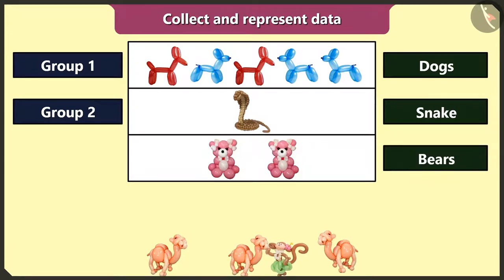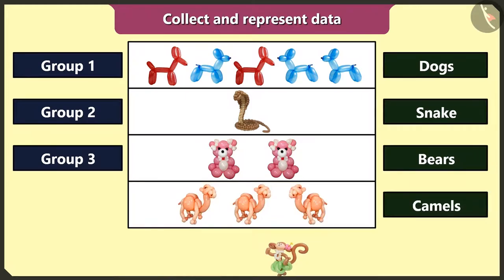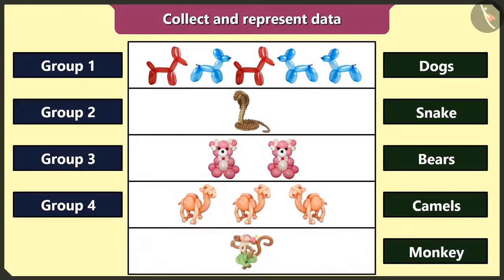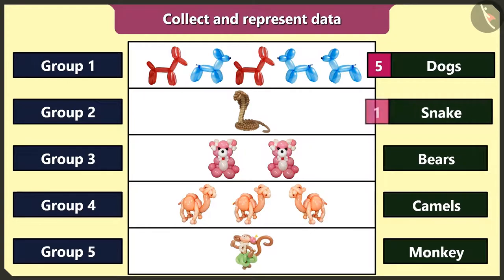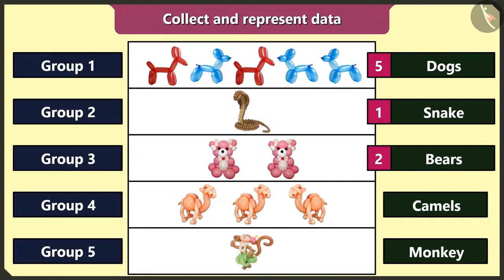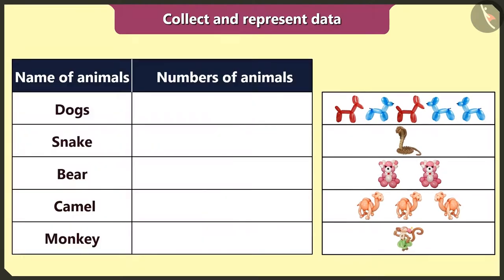Third group of bear-shaped balloons, fourth group of camel-shaped balloons, and fifth group of monkey-shaped balloons. Now I will count the animals in each group. There are five dog-shaped balloons in the first group, one snake-shaped balloon in the second group, two bear-shaped balloons in the third group, three camel-shaped balloons in the fourth group, and one monkey-shaped balloon in the fifth group. Now I will make a table and represent all the data in it.